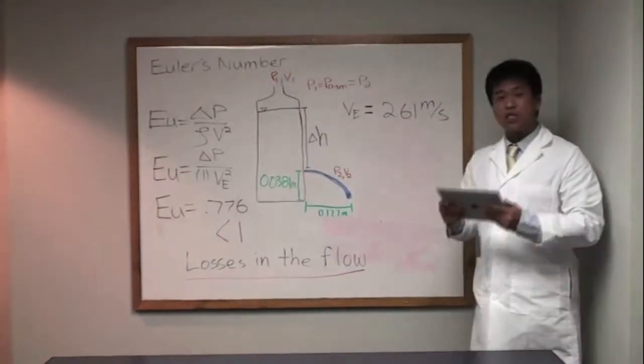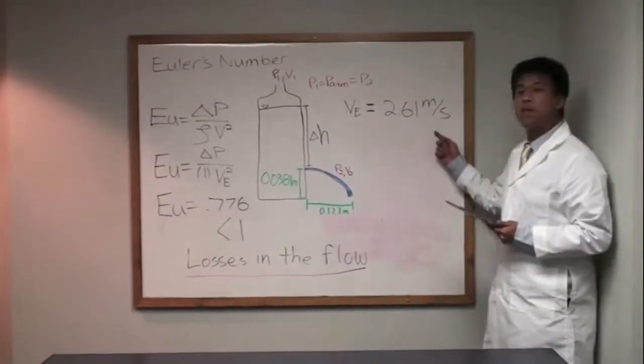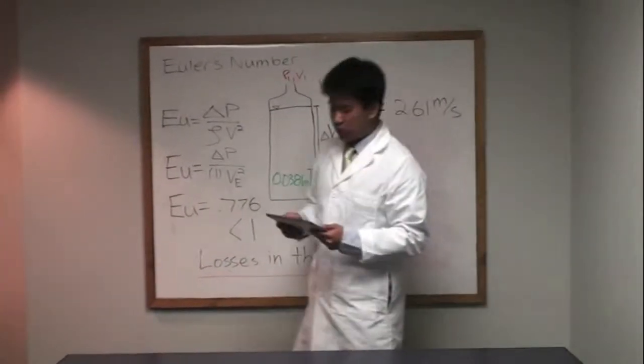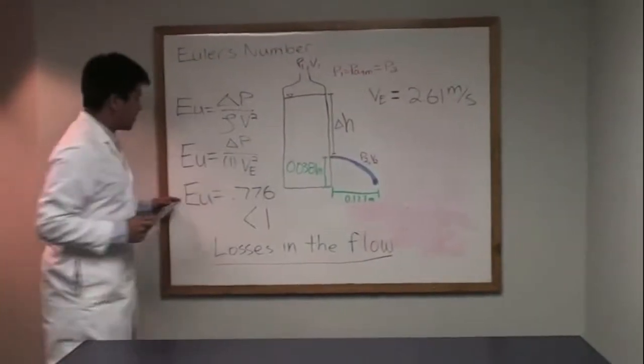In this experiment, we got the experimental velocity to be 2.61 meters per second. From there, we can substitute it into Euler's equation to get 0.776.